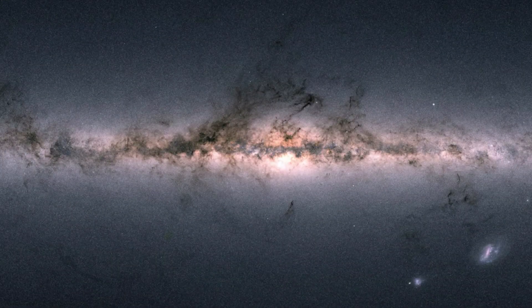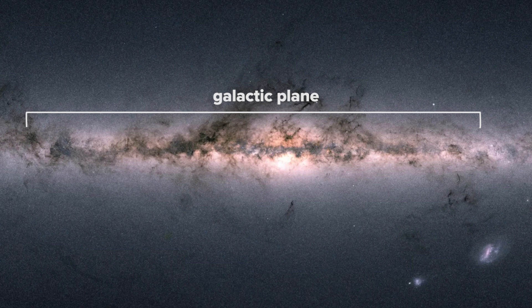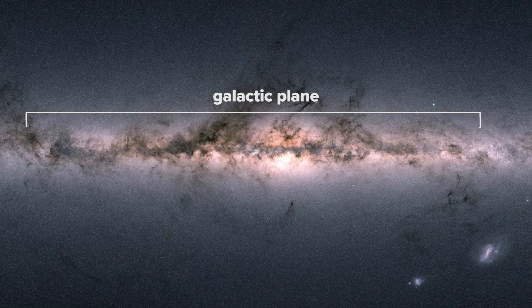That glowing band of light across the middle is the galactic plane, a flattened disk where most of our celestial neighborhood is found. As you can probably imagine, the bright regions indicate the denser concentrations of bright stars, and the dark regions display areas with less.